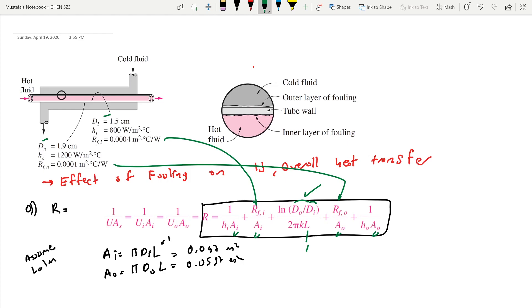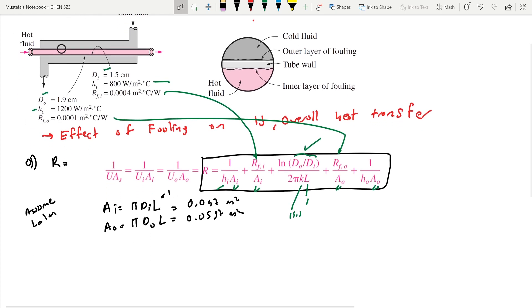L is one meter and thermal conductivity - this was made from steel, so we know the thermal conductivity of steel, which is 15.1 W/m·°C. hi and ho are given, so it's just algebra. We'll plug in the numbers.